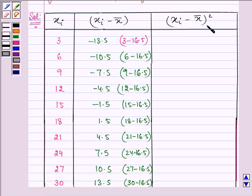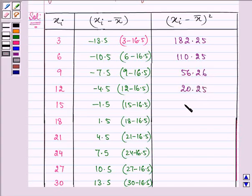Now I need to square all the values which are here. So it is minus 13.5 the whole square giving us 182.25, then minus 10.5 the whole square 110.25 and so on 56.25, then we have 20.25, then we have 2.25.